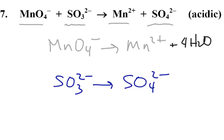We have four oxygens on the left, so we're going to throw in four water molecules on the right, because there's always water floating around. Now we want to do our hydrogens. On the right-hand side, we have eight hydrogens. So on the left-hand side, we're going to add eight hydrogen ions, because there are always hydrogen ions floating around in these solutions.